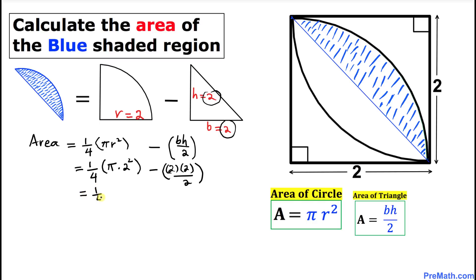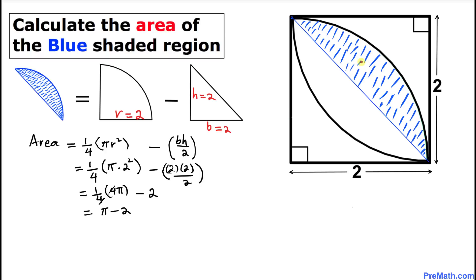Simplifying: one-fourth times 4π gives π, and 2 times 2 is 4, divided by 2 is 2. The four and one-fourth cancel out, so we get π minus 2. The area of this portion turns out to be π minus 2.